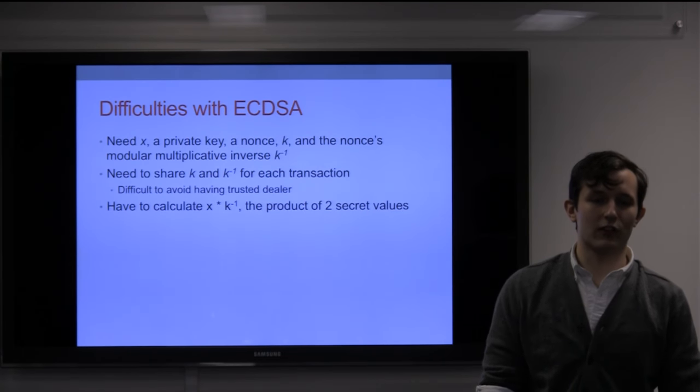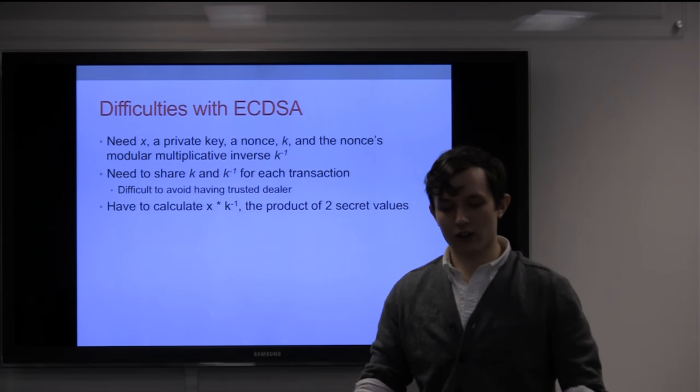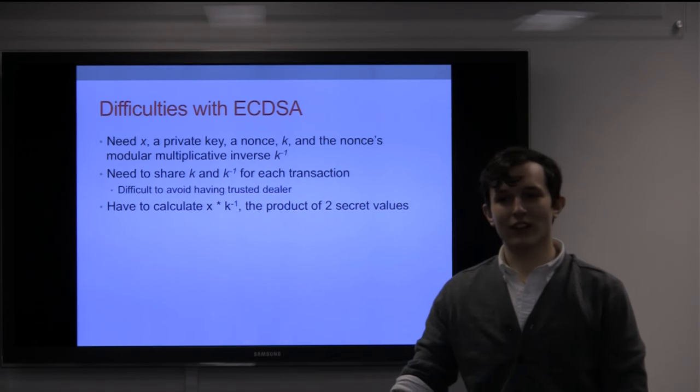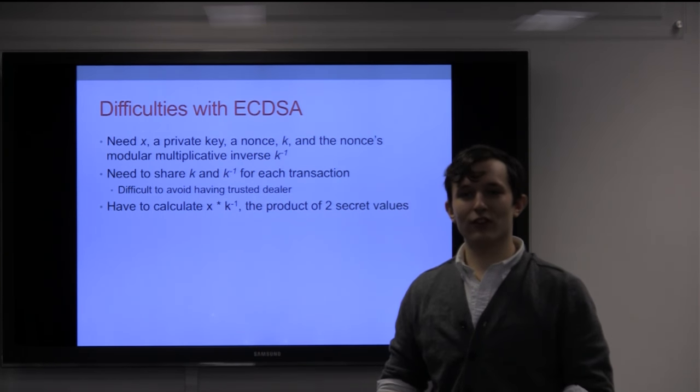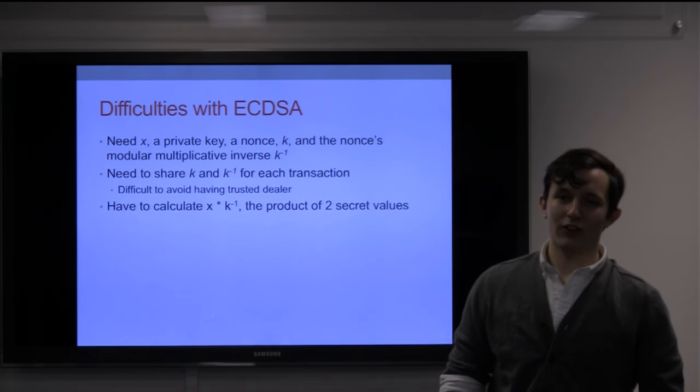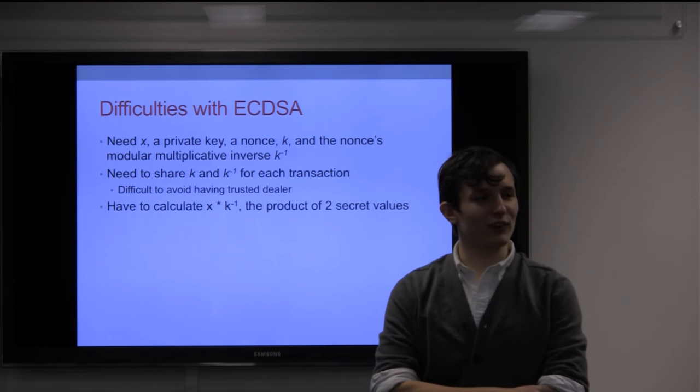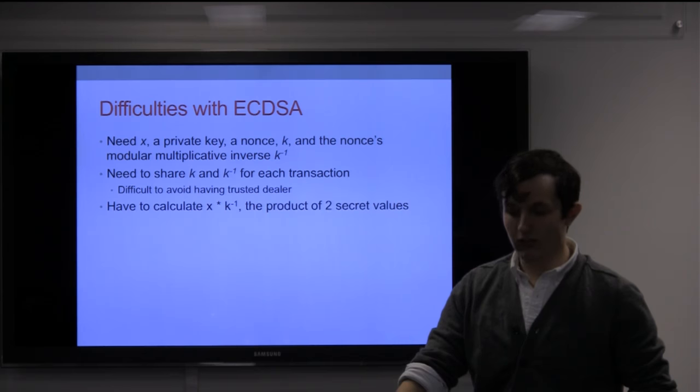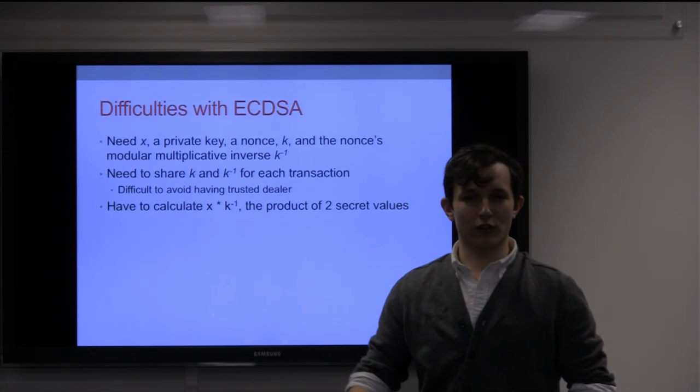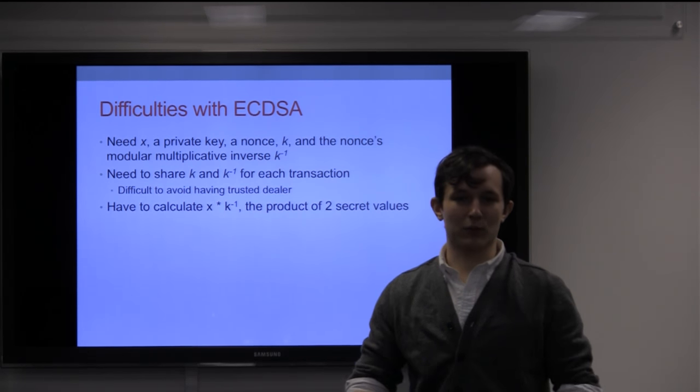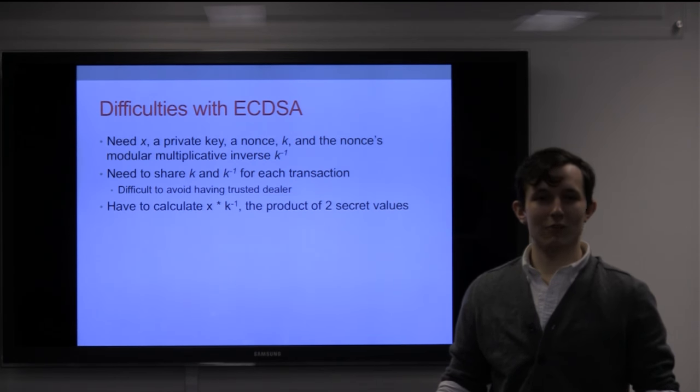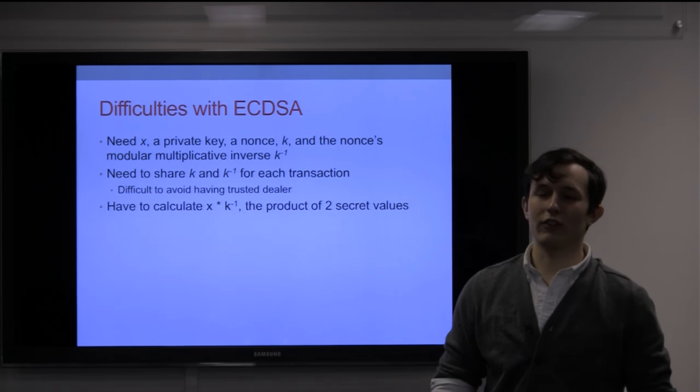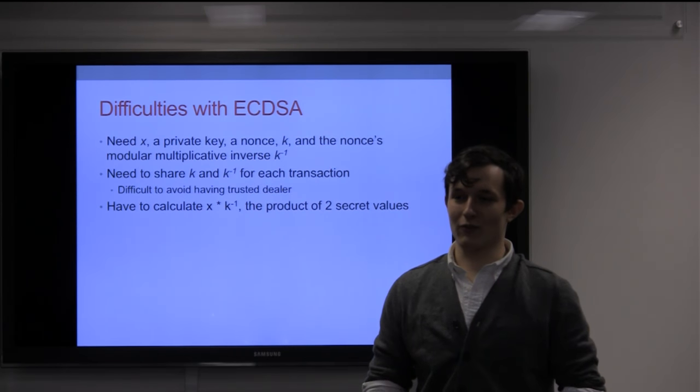ECDSA has a couple more difficulties than DSA in that you need a private key, an associated nonce, and the nonce's multiplicative inverse. For each transaction, you'll always have your same share of the private key, but then each transaction you'll need a new K and a new K inverse. If you have the whole K, then that implies that with your key share you're able to reconstruct the key, so that's not good. The very easy idea is that you have some central trusted party who every now and then calculates these and hands them out, but then that leads to having a central point of failure.